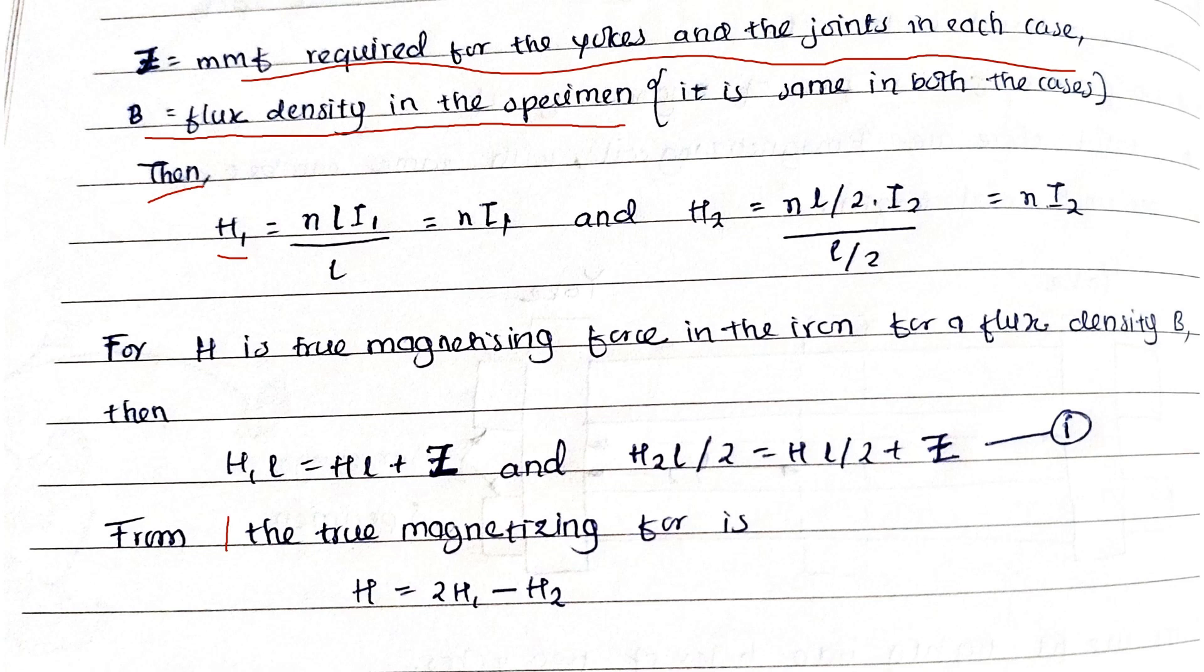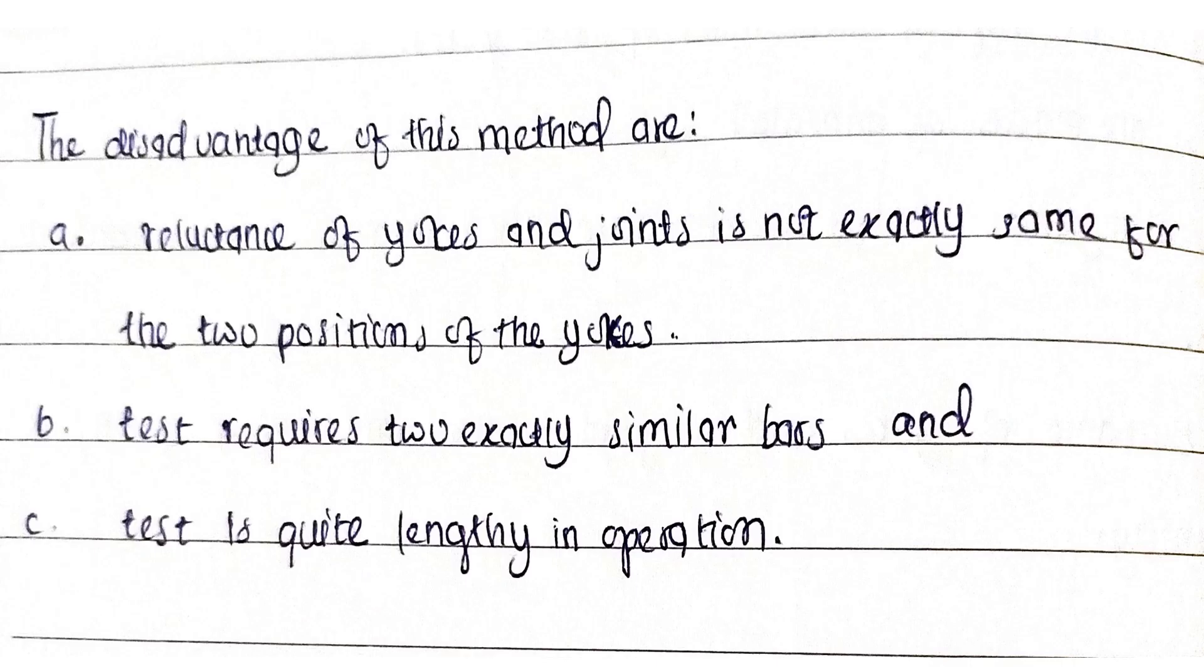H = 2H₁ - H₂. The disadvantages of this method are: